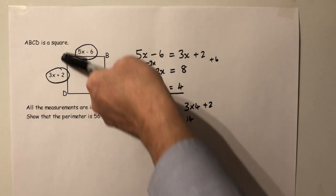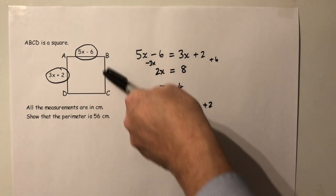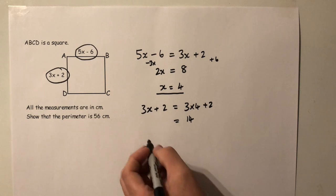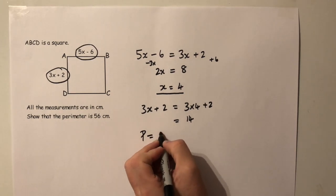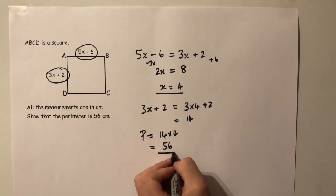So the perimeter of the square is 14 plus 14 plus 14 plus 14, or 4 times 14, which is 56.